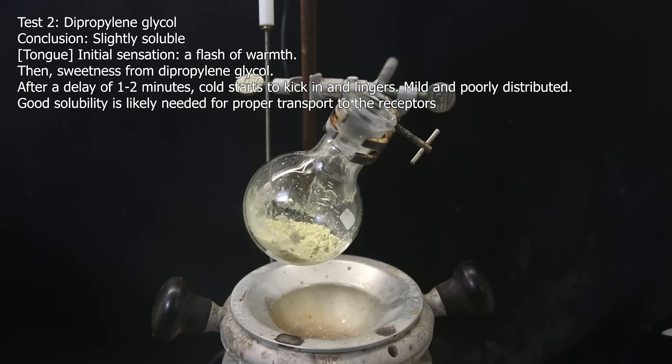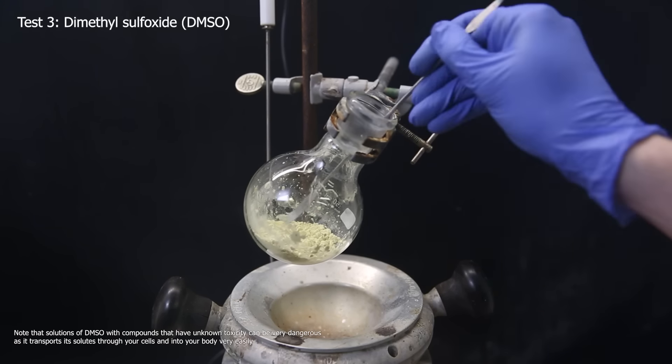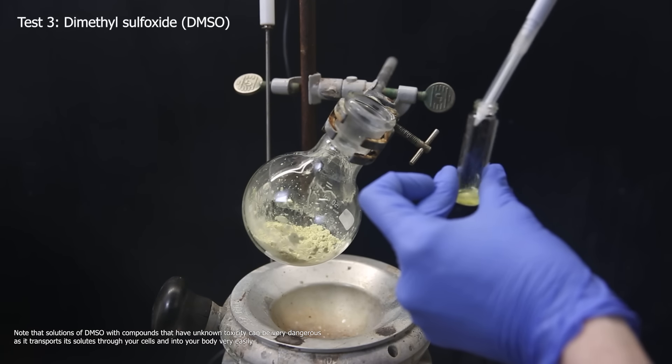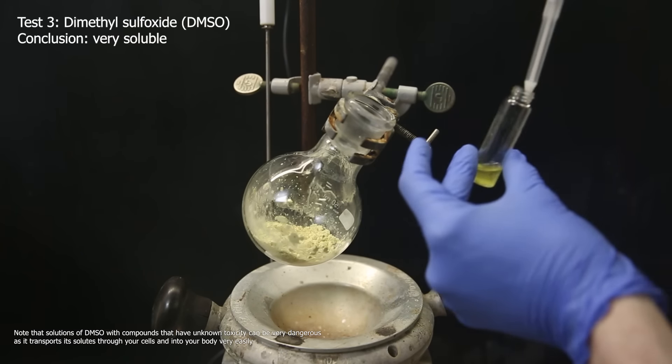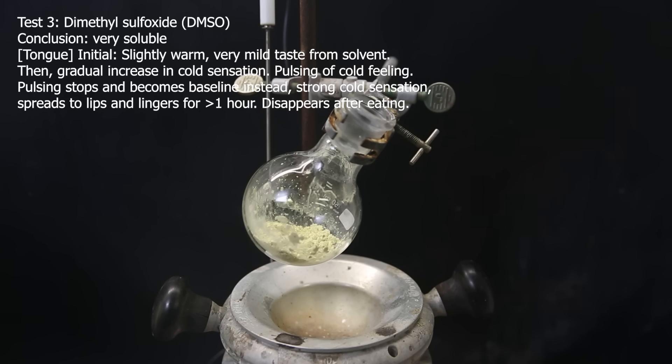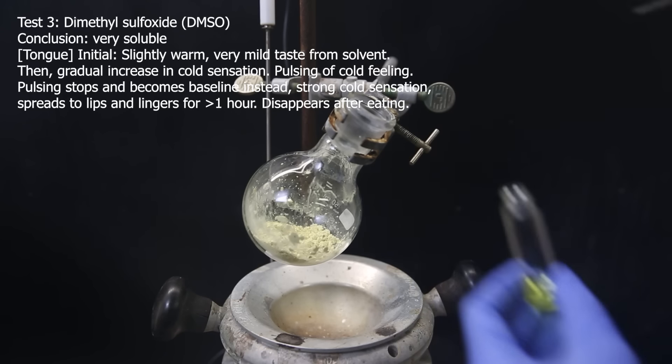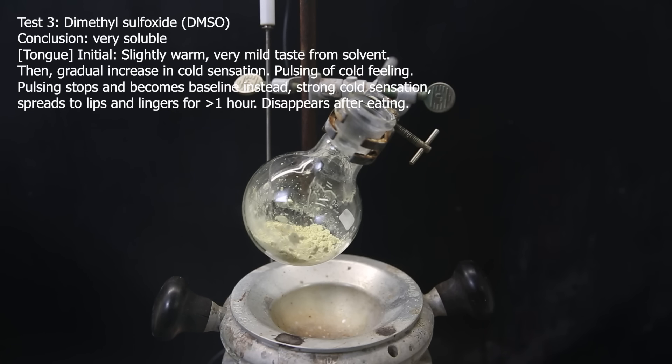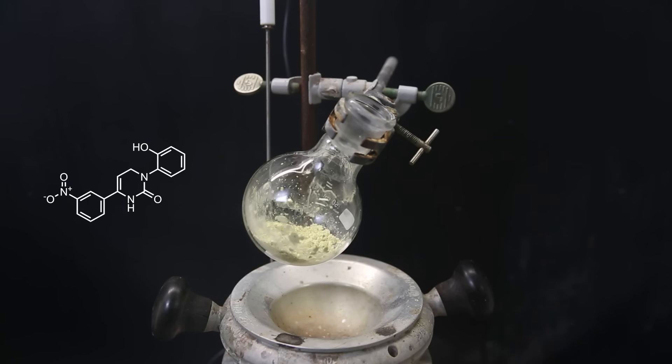This leaves me with one option that I know penetrates cells very well and is also safe to ingest, which is dimethyl sulfoxide. So I repeat the same things, and luckily, it seems to be very soluble in DMSO, giving a transparent yellow solution. Again, it gives an initial flash of warmth, then I shortly taste the solvent which quickly subsides, and the cold sensation starts to kick in. It first feels like the coldness is pulsing up and down in strength, and then settles to a strong cold sensation that lingers and spreads to my lips. It remained noticeable for at least one hour, and it disappeared only after I had eaten. I agree with what is said online. It does feel like a good 2.5 times colder compared to menthol, and it requires only a very tiny bit to be effective, and it lingers for a very long time in comparison.